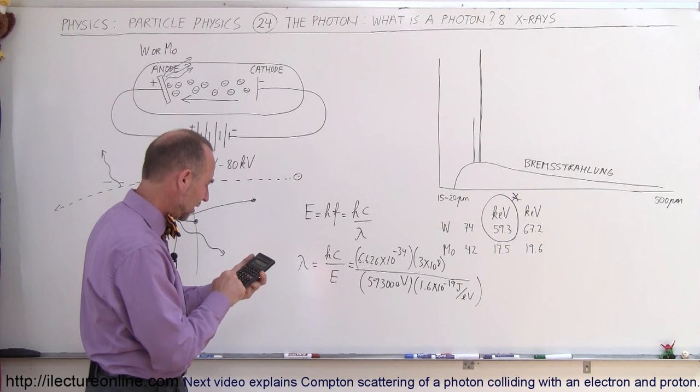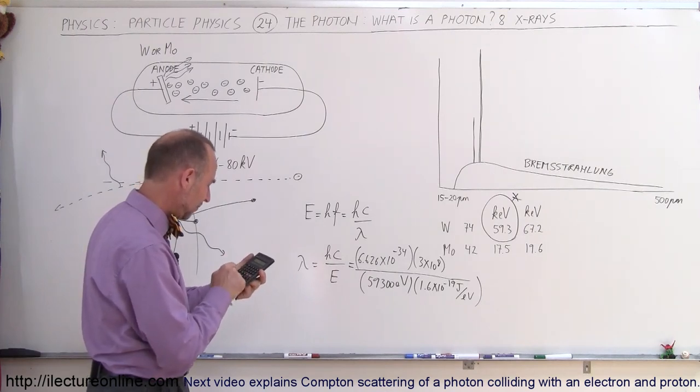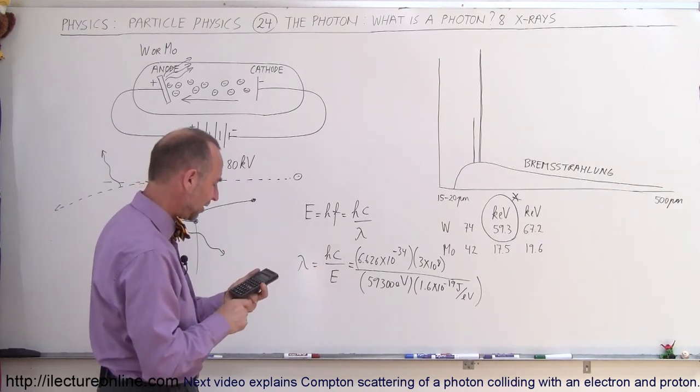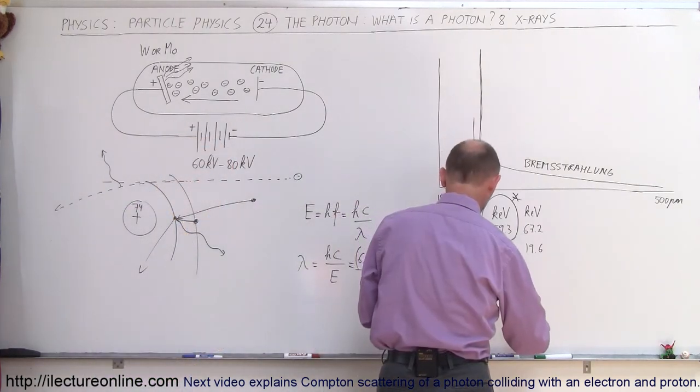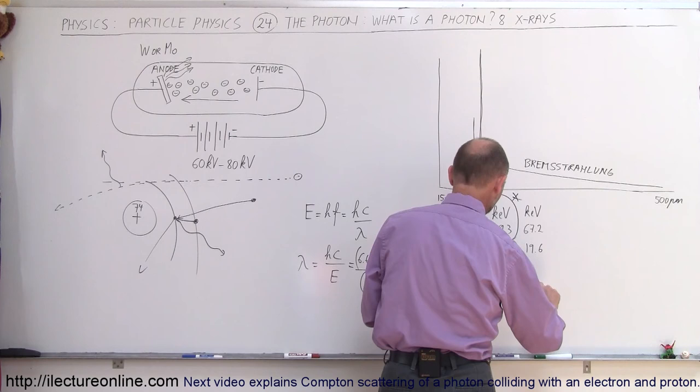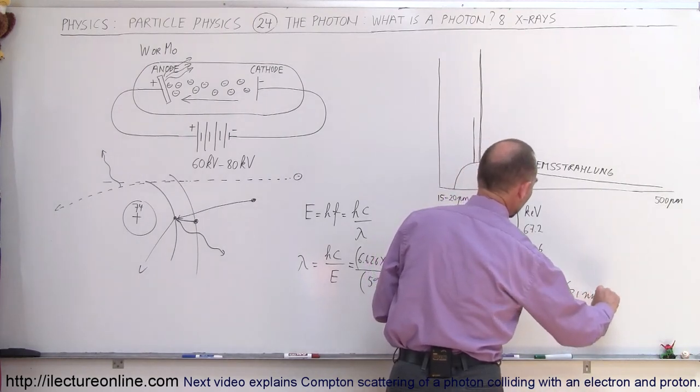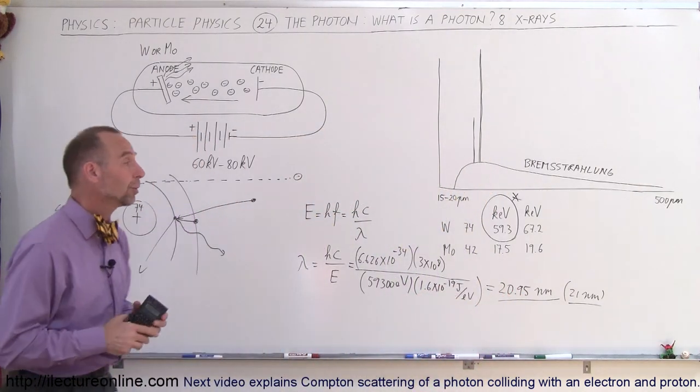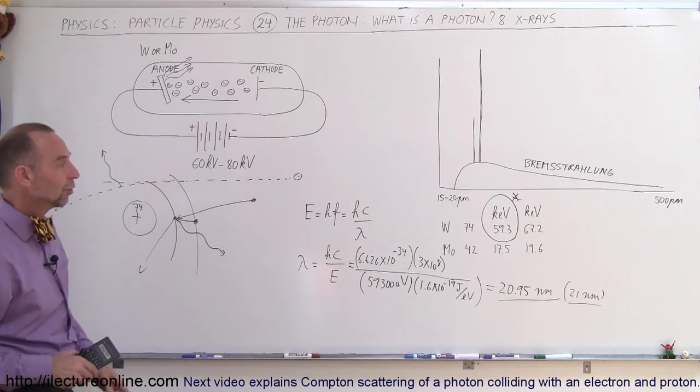So, that's 6.626 e to the minus 34 times 3 e to the 8 divided by 59,300 and divided by 1.6 e to the minus 19. And we have a wavelength of 20.95 nanometers. So, just about 21 nanometers wavelength of x-ray radiation that we use for medical purposes when the target is tungsten. Notice molybdenum, we have an energy of about a third, a little bit less than a third.